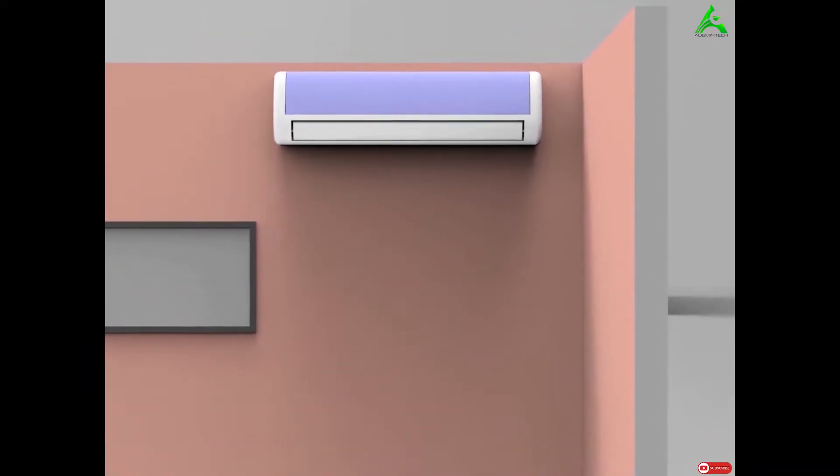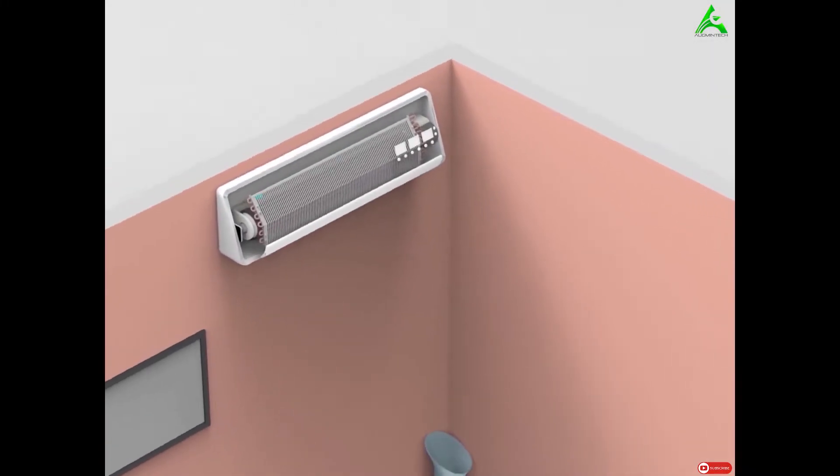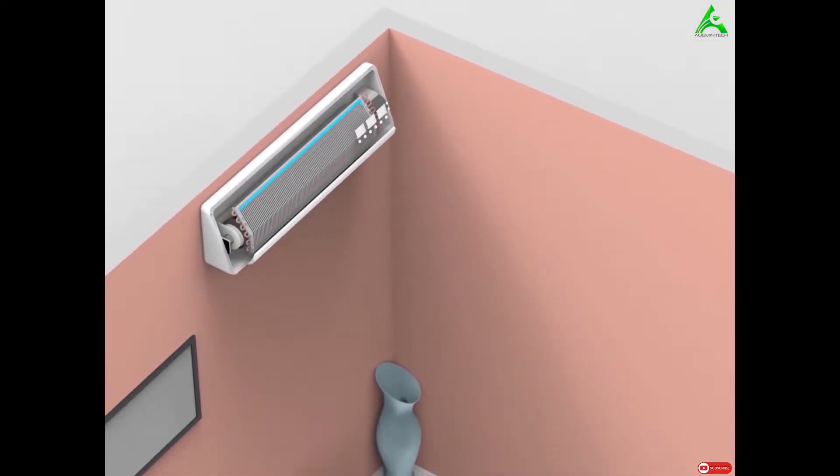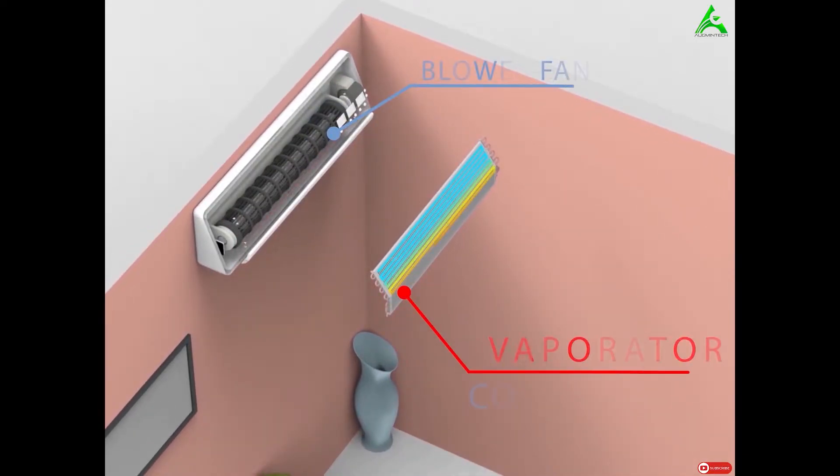When cooling is desirable, the compressor runs and low temperature, low pressure liquid refrigerant enters the evaporator coil of the indoor unit. As it flows through the coil, the refrigerant absorbs heat from the surrounding air.